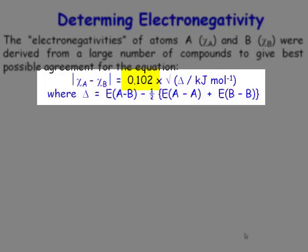0.102. That is a scaling factor to reflect the modern units of kilojoules per mole. When Pauling was working on this, he was using the units of electron volts. So the modulus of this is equal to 0.102 times the square root of delta.